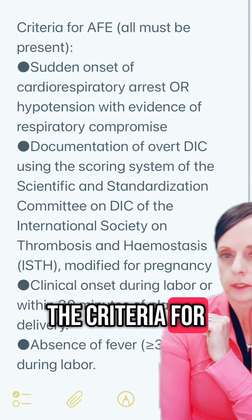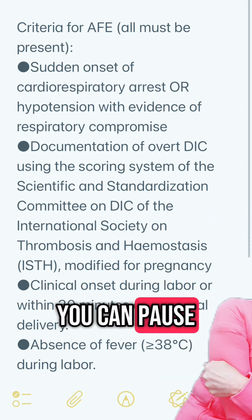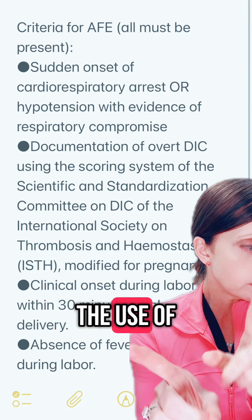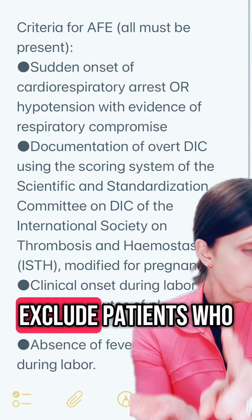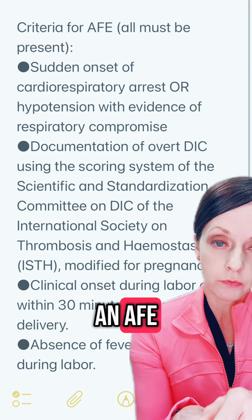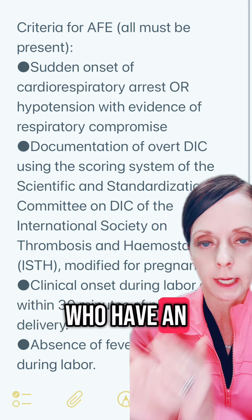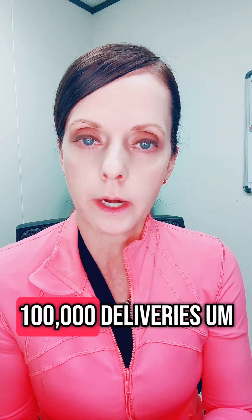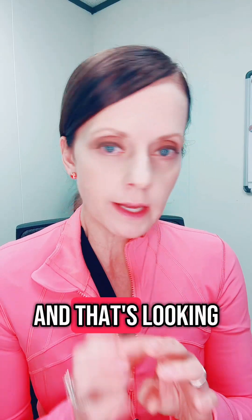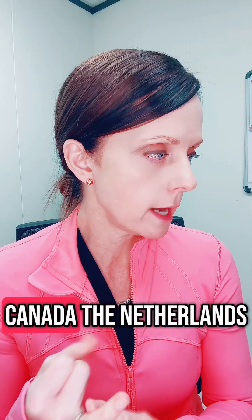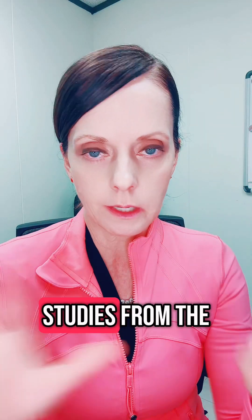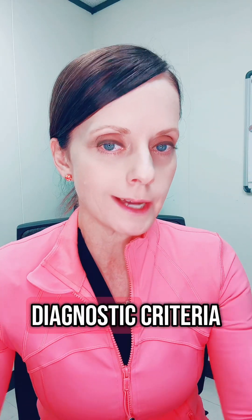Here are the criteria for diagnosis of AFE — you can pause to read. Experts agree that the use of these criteria exclude patients who did not have an AFE, but may not capture all patients who have an atypical AFE. It is estimated to occur in 1.9 to 6.1 cases per 100,000 deliveries, looking at data from Australia, Canada, the Netherlands, the UK, and the United States. We have to consider that all of these studies from different countries are using different diagnostic criteria.